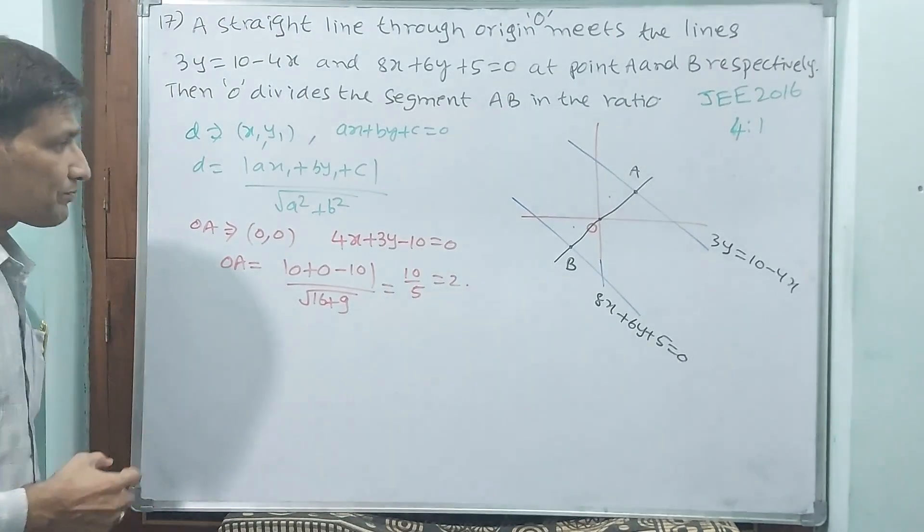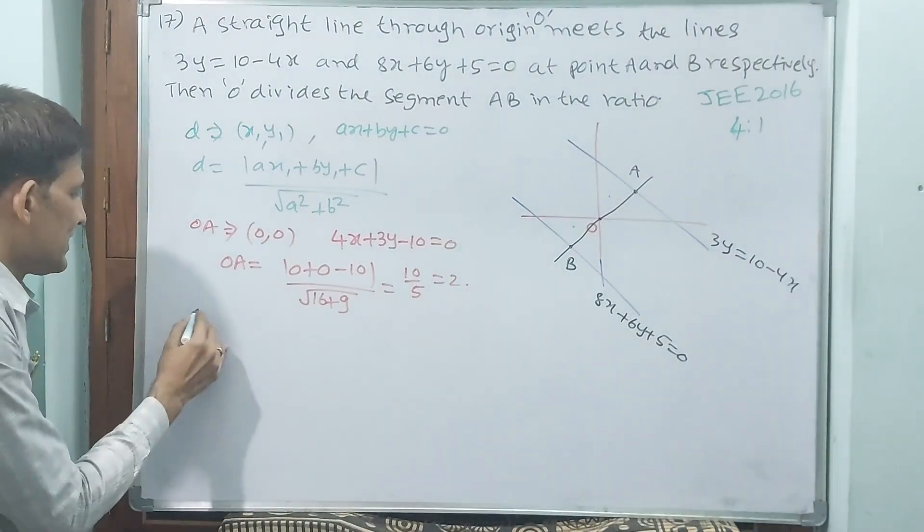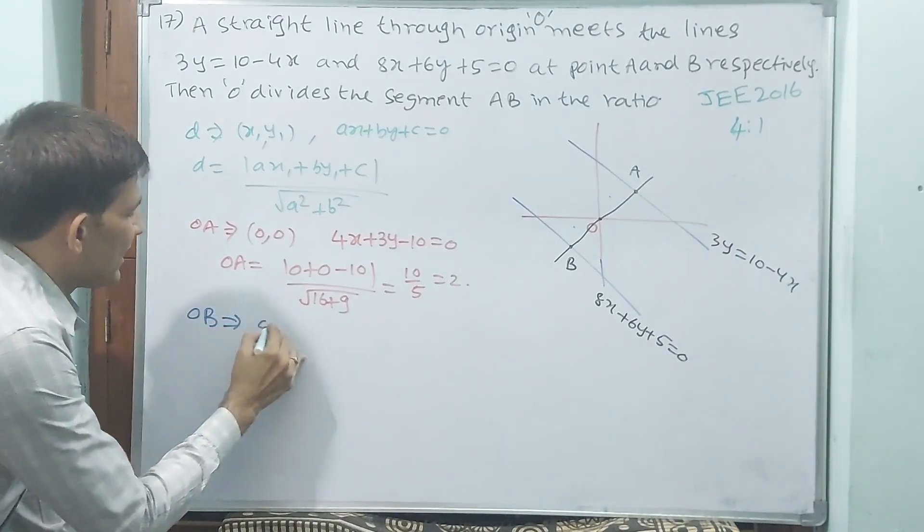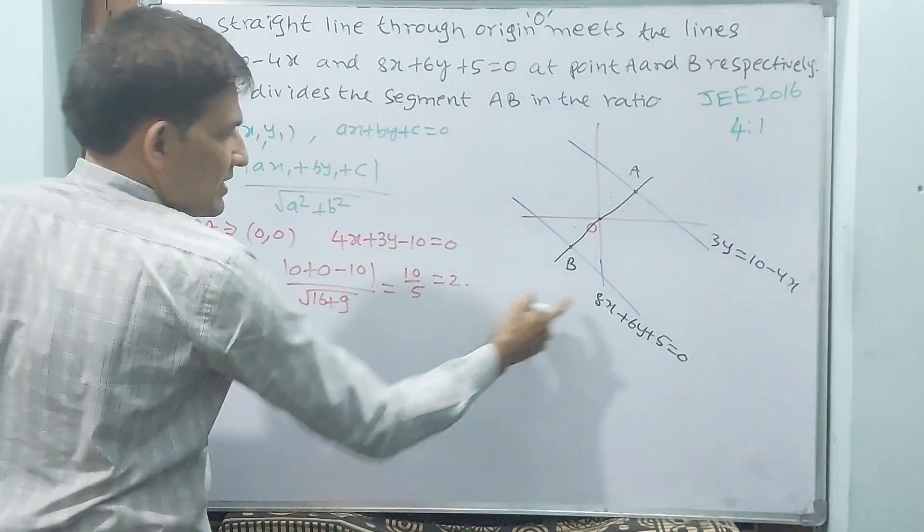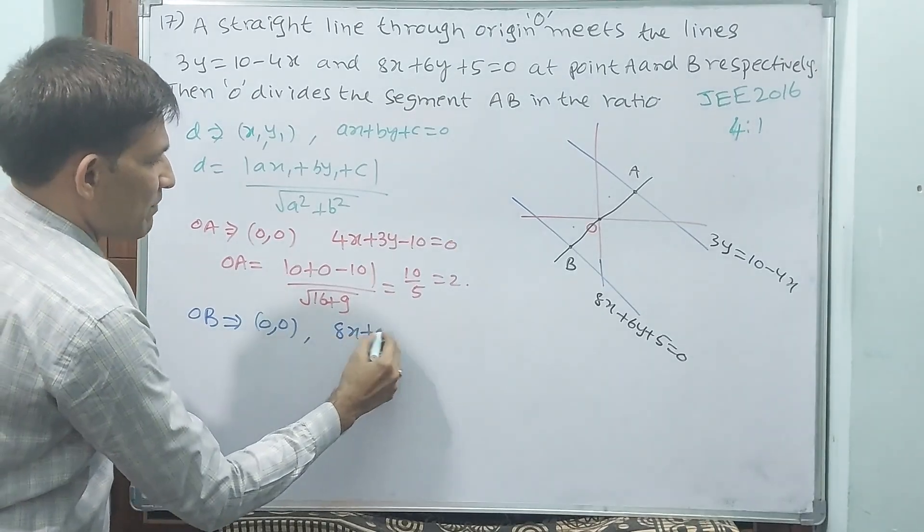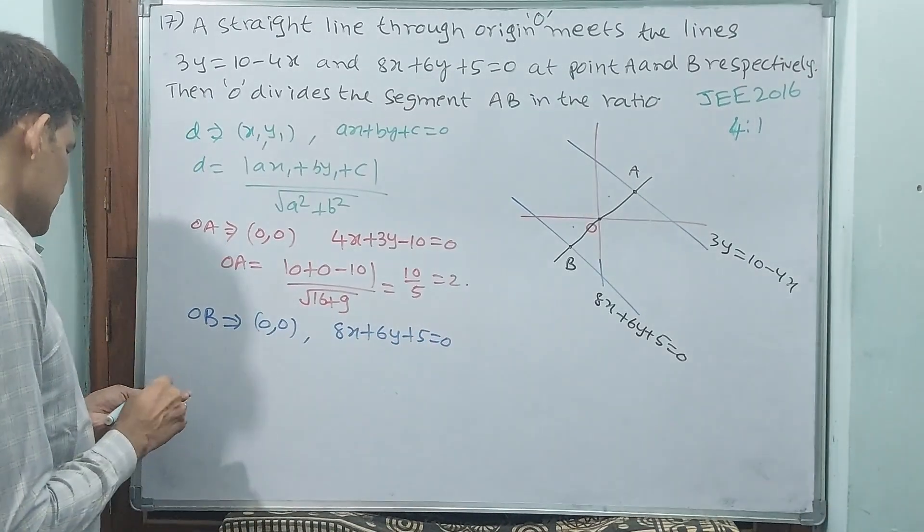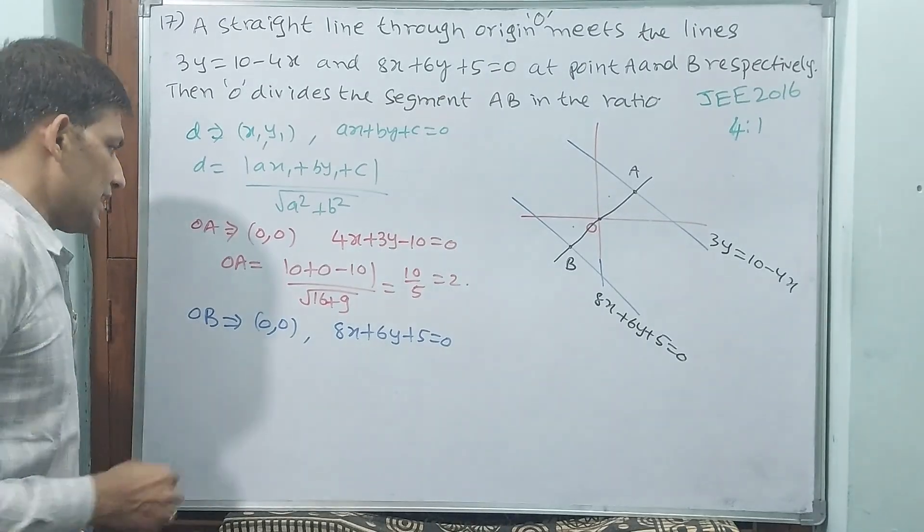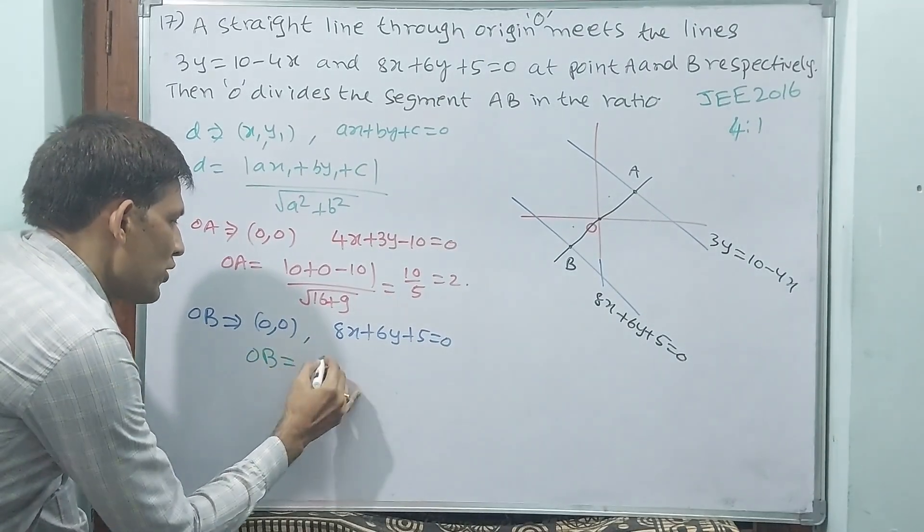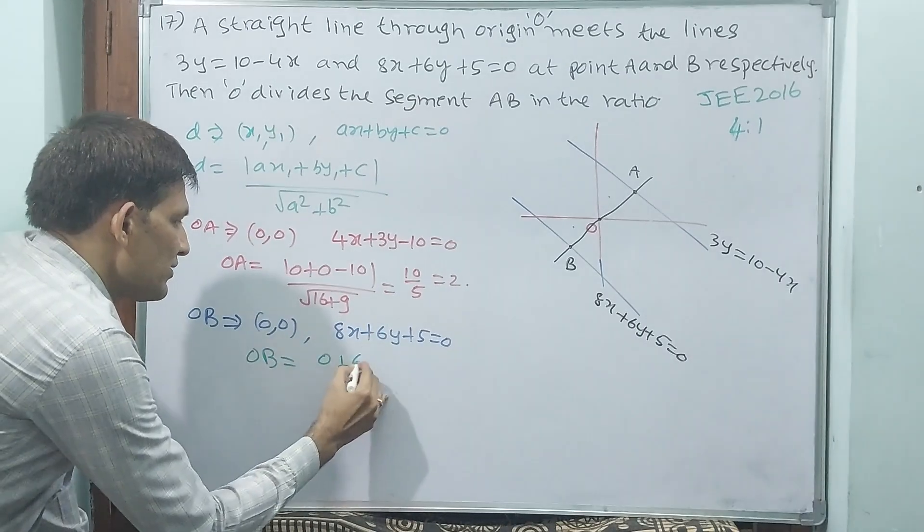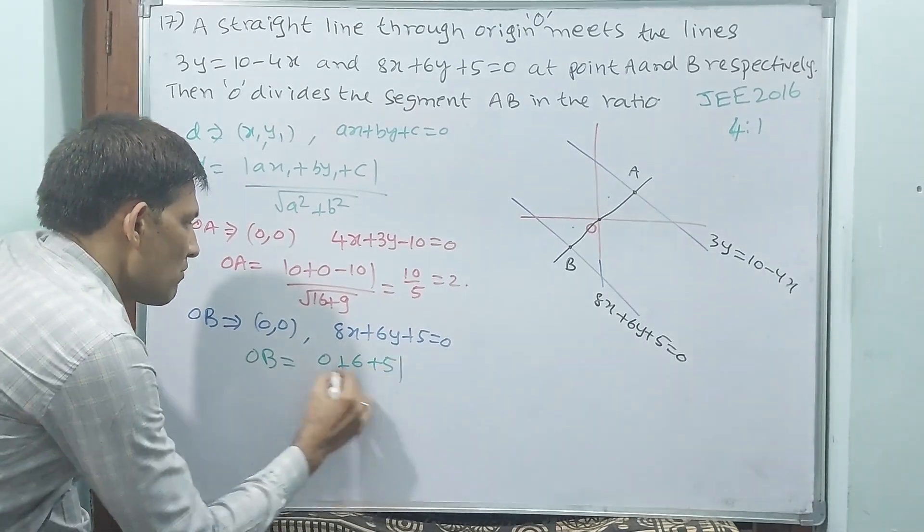What about OB? OB uses origin (0, 0) and the equation 8x + 6y + 5 = 0. OB = |0×8 + 0×6 + 5| / √(8² + 6²).